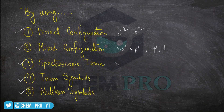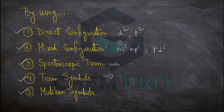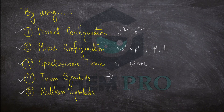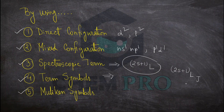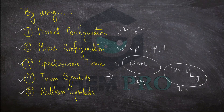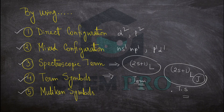For spectroscopic term and term symbols, we have to know the difference. When it is given like 2S+1L, it is the spectroscopic term. But when the J value is given — that is 2S+1LJ — this is the term symbol. We have to remember: when the J value is given it is called term symbol, and when the J value is not given it is called spectroscopic term.